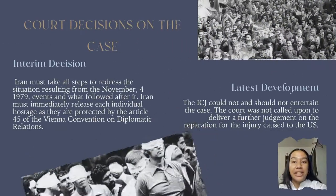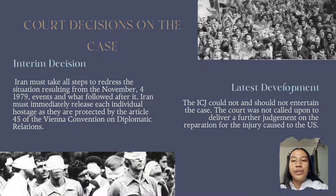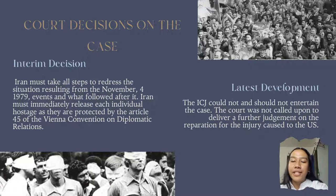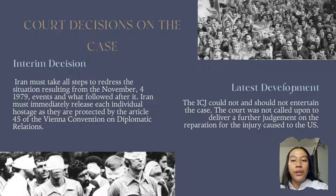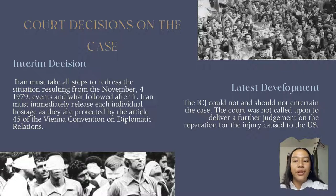The court's interim decision was that Iran must take all steps to redress the situation and must immediately release each individual hostage, as they are protected by Article 45 of the Vienna Convention on Diplomatic Relations. As a later development, the court was not called upon to deliver a further judgment on reparation for injury caused to the U.S. On May 12, 1981, the case was removed from the list following discontinuance.